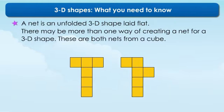A net is an unfolded 3D shape laid flat. There may be more than one way of creating a net for a 3D shape. These are both nets from a cube.